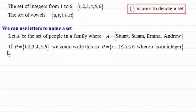Or if P equals the set of integers one, two, three, four, five and six, we could write this even as P equals the set of x, such that x is greater than or equal to one, but less than or equal to six, where x is an integer. So we've got several ways then that we can label sets.